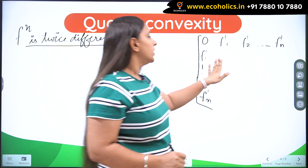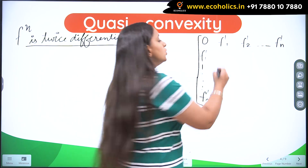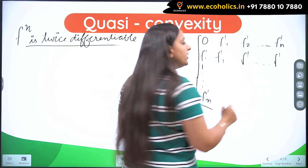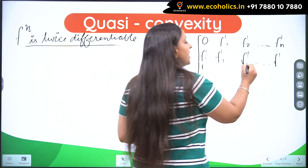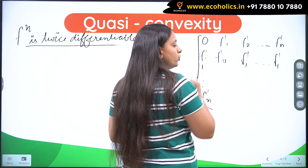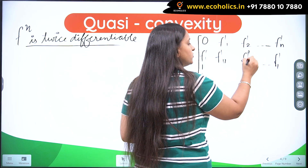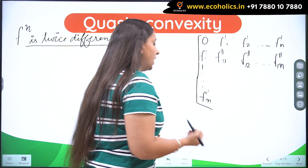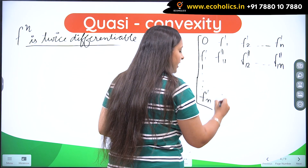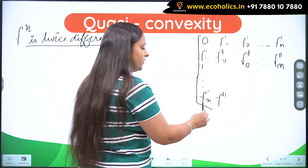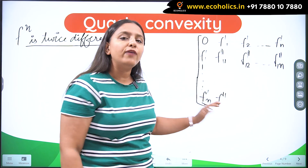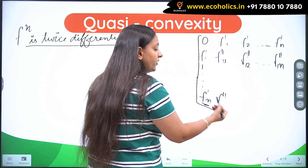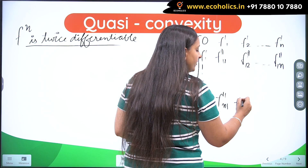Coming to the second row, since we are working with f′₁ here, f′₁ would be the constant term, but now I have to take second-order derivatives starting from there — first with respect to the first variable (f″₁₁), then with respect to the second variable (f″₁₂), and so on up to the nth variable. Following the same pattern, whichever row you are working with, whatever the first-order derivative is there, you keep that constant throughout the row. So the last row gives f″ₙ₁, f″ₙ₂, and f″ₙₙ.